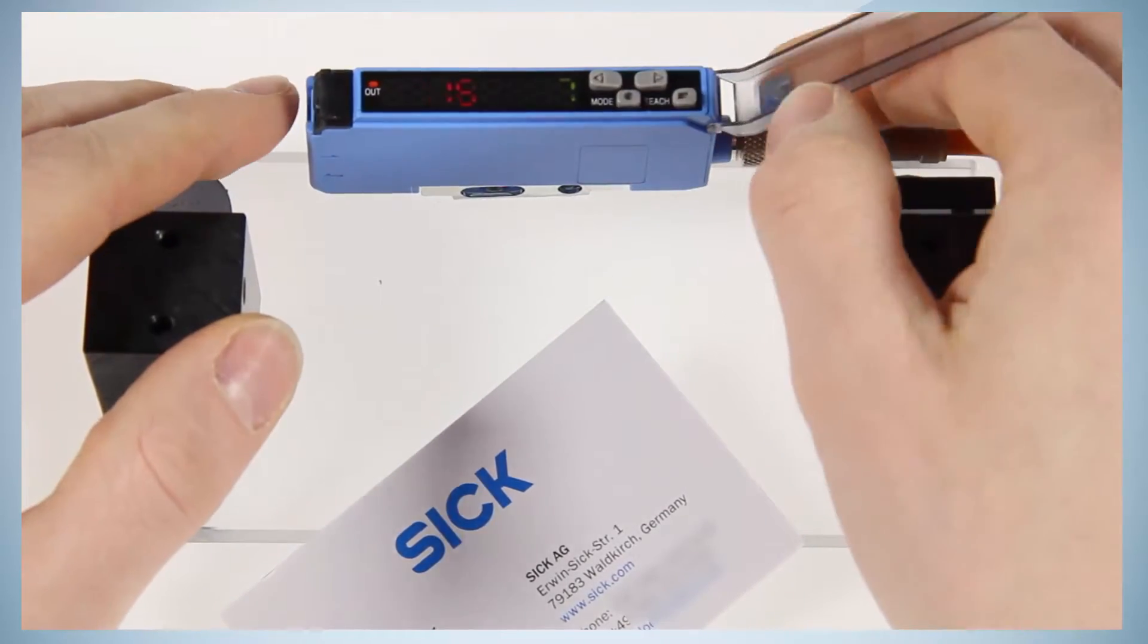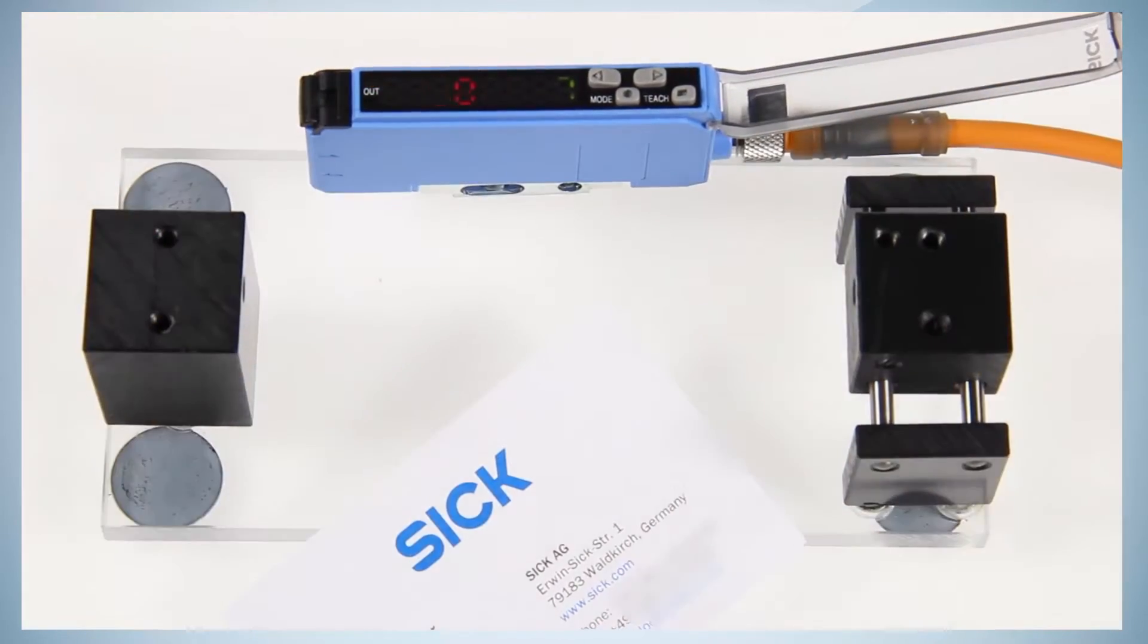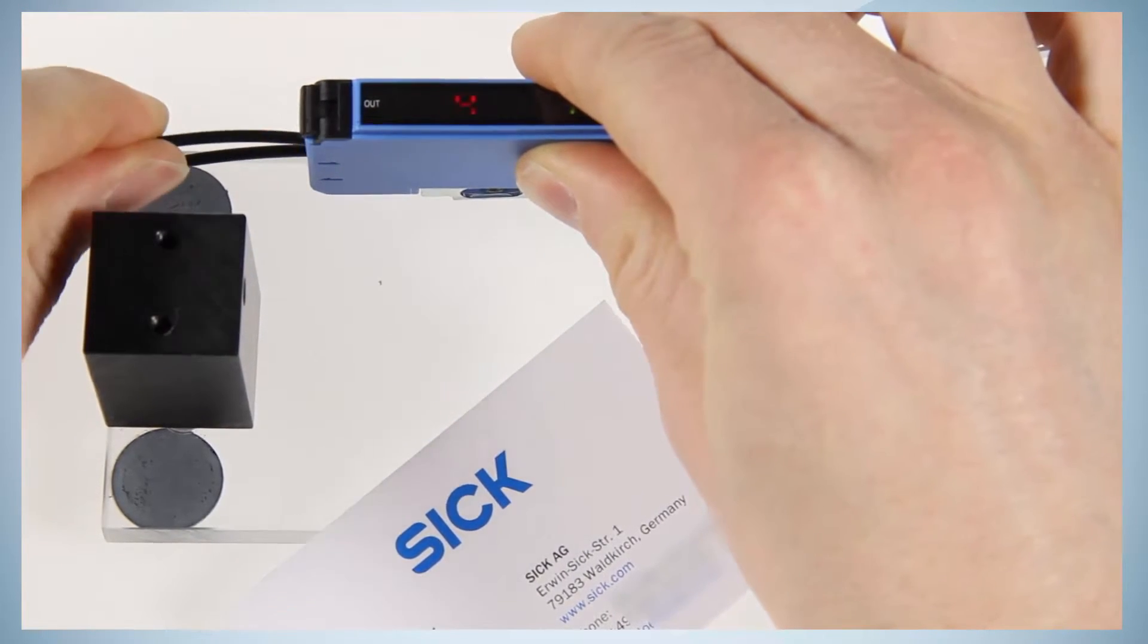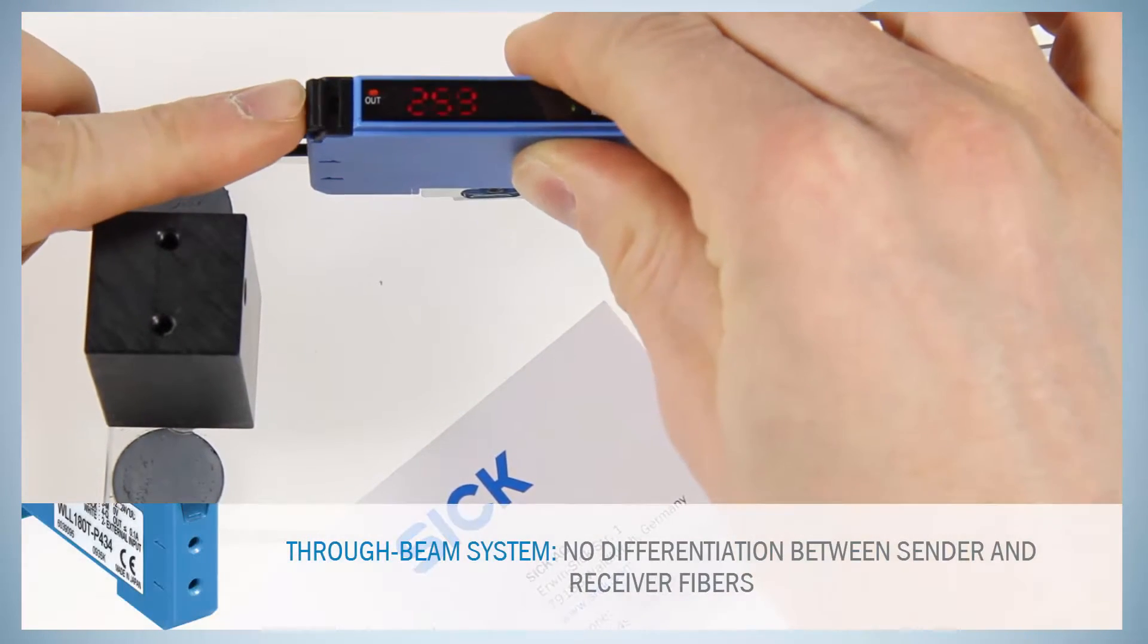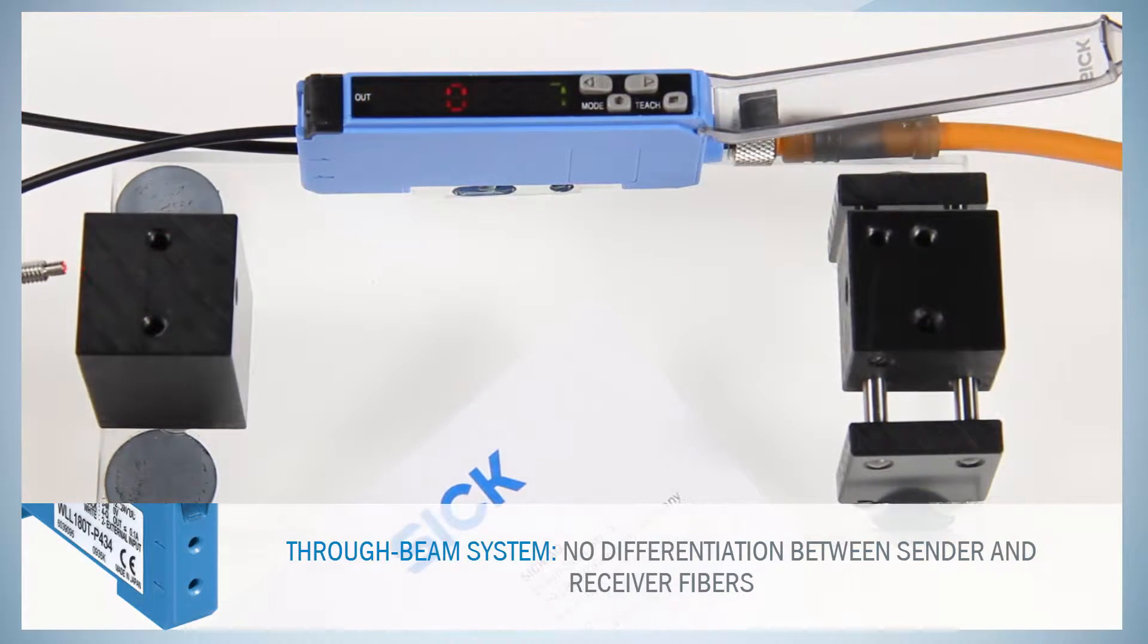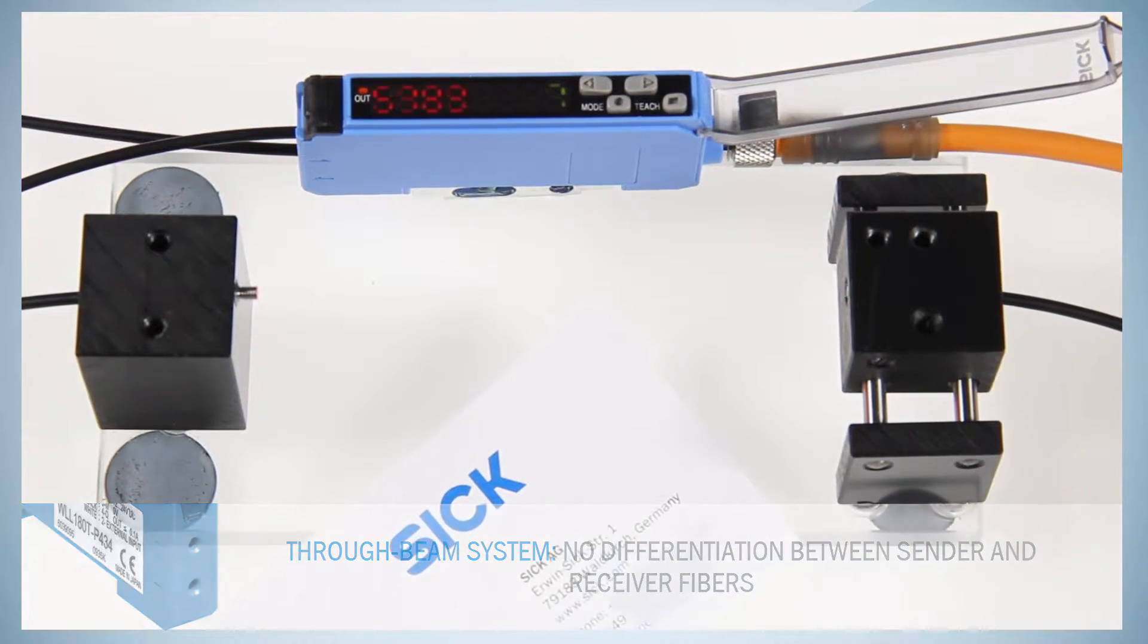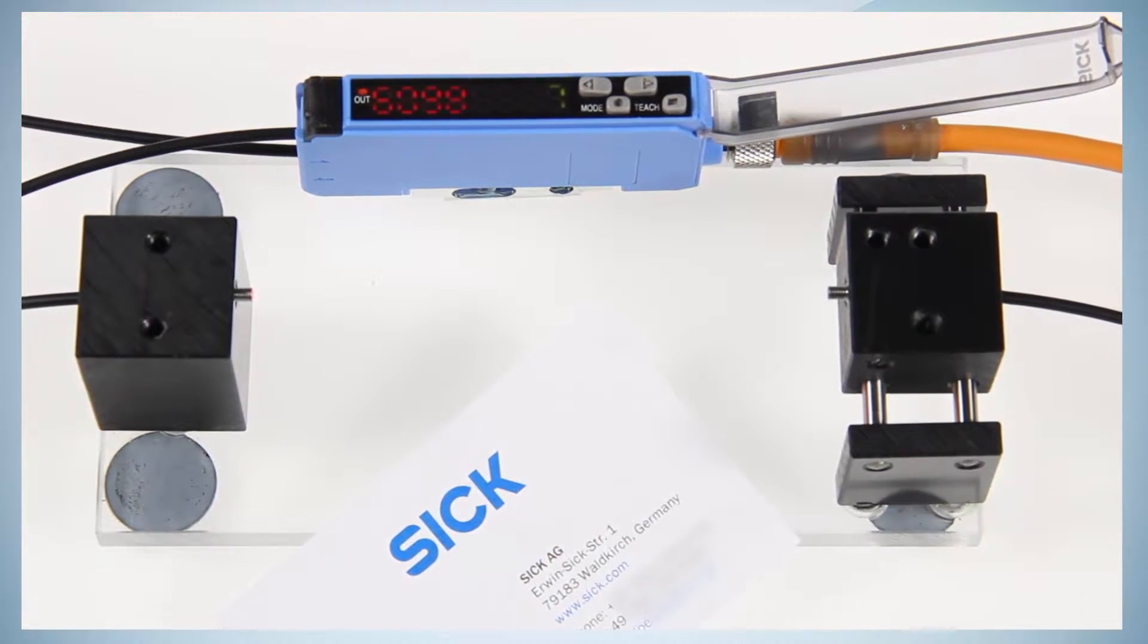Open the transparent plastic cover of the amplifier and open the lock lever by pushing it downwards. Insert the fiber cables in the connection openings of the amplifier till the stop and lock them by pushing the lock lever upwards. Mount the fiber heads of the LL3TB01 in the cubic supports of the demo kit.